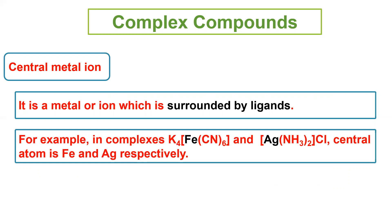Isi tarah doosra complex hai, Ag(NH3)2Cl. Is mein silver (Ag) central metal atom hai. Central metal atom woh metal atom hote hai joh ligands se surrounded hota hai.